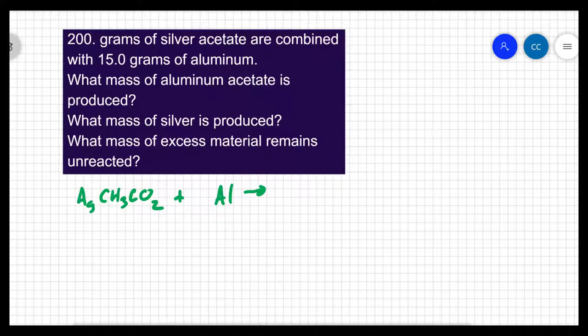Now aluminum forms a plus three charge, so it's not going to bond with a one-to-one ratio. I'm going to need three acetates to balance out the aluminum, and then the silver is going to be left by itself.